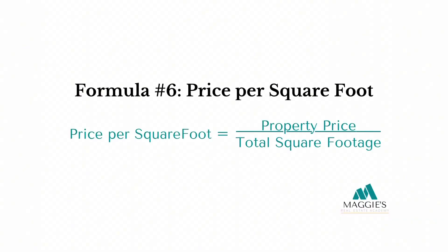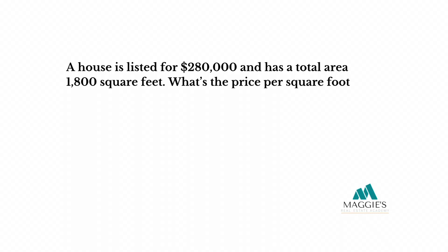Formula number six: price per square foot. Property price divided by total square footage equals price per square foot. A house is listed for $280,000 and has a total area of 1,800 square feet. What's the price per square foot? Divide $280,000 by 1,800 and you get $155.56 per square foot.